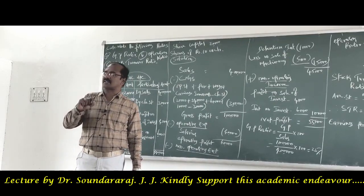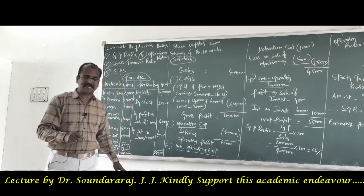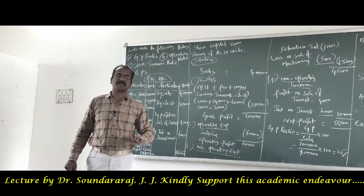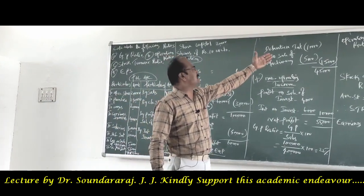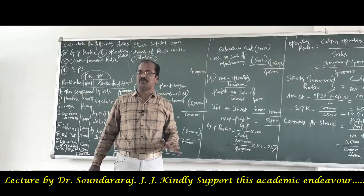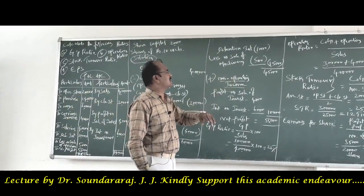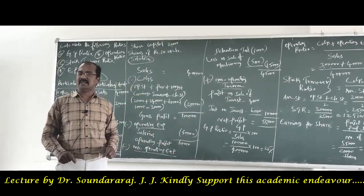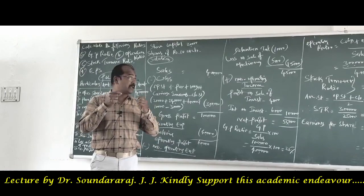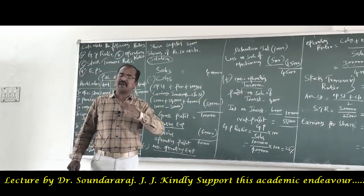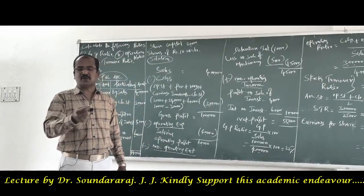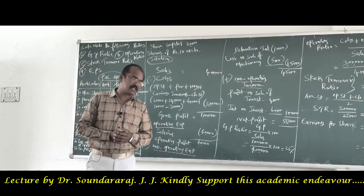From operating profit, let us deduct non-operating expenses and losses. In this problem, two items — debenture interest of 10,000 rupees and loss on sale of machinery of 5,000 — are non-operating expenses and losses. Their total comes to 15,000. Subtracting 15,000 from operating profit of 60,000 gives a balance of 45,000 rupees.